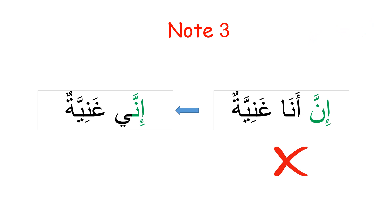Adding ya to inna still isn't correct. Remember, this ya is a long vowel not in conjunction with any diacritic, so we must change the movement mark of the preceding letter to a kasra to allow ya to elongate the sound. The correct answer is inni. Since attached personal pronouns are mabniyya, you don't need to worry about changing the case ending to the accusative.